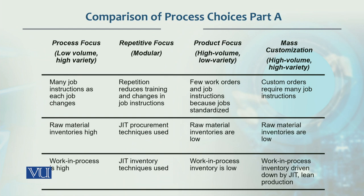In product focus, raw material inventory is low and work in process is also low — the product is made and moved out immediately. In mass customization, raw material inventories are low but work in process is high.